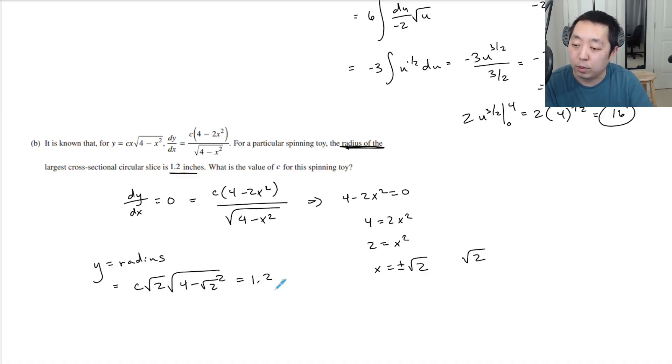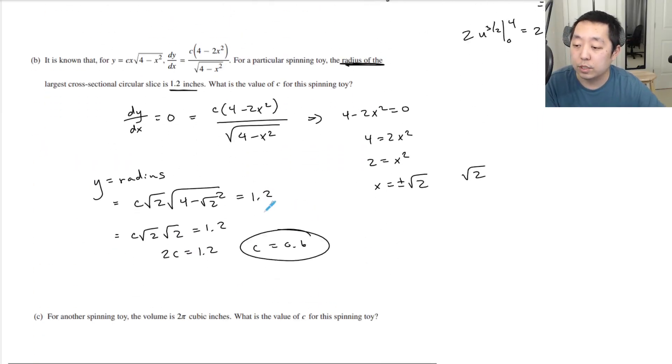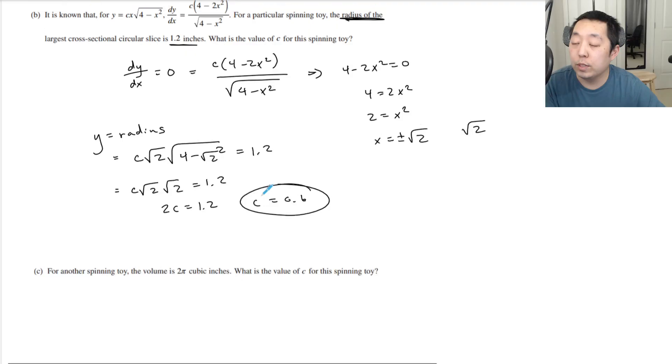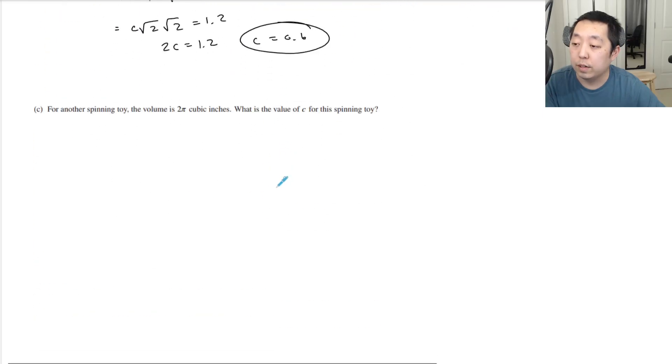That equals 1.2. So this is c√2 times √2, because (√2)² is 2 and 4-2=2. That's √2·√2 = 2, so 2c = 1.2, therefore c = 0.6. That was kind of strange, a little bit tough there.